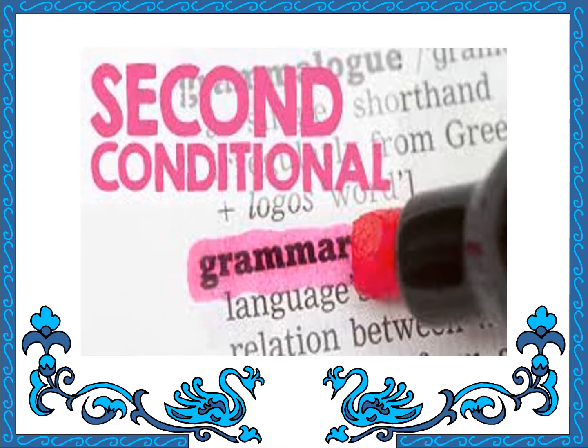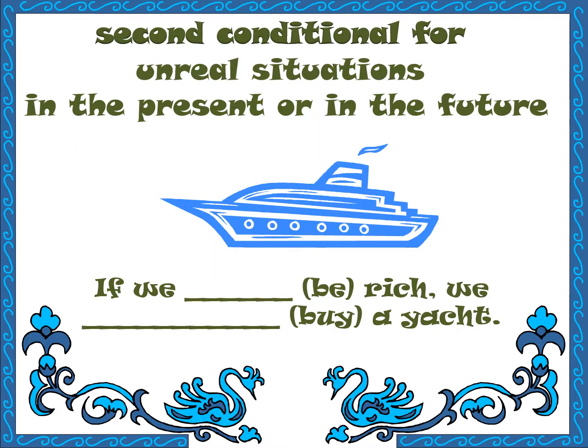We don't need anything else — we know the rule from the examples. Second conditional is for unreal situations — something opposite to reality, or something impossible in the present. First example: 'If we were rich, we...' — will or would? Excellent! We would buy a yacht. That's 'd' — the abbreviation for 'would.'